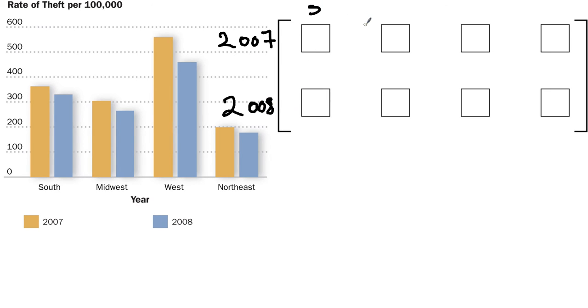And then this is going to be south. This is going to be midwest. This is going to be west. And this is going to be northeast. So in 2007 in the south, the rate of theft per 100,000 people was about, it looks like, 360. In 2007 in the midwest it was around 300. And in the west it was around 550. Northeast, it was around 200. Okay, so I'm looking at this bar for each of those elements.